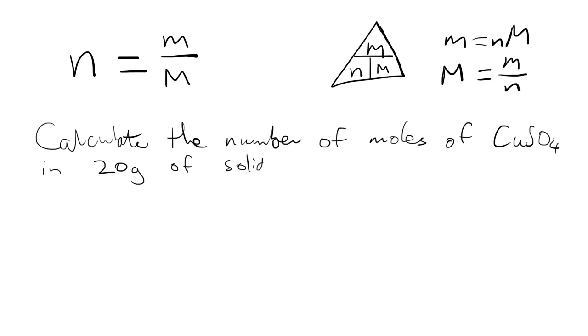So in order to do this calculation we're going to use our formula n equals little m over big M. Now we know our mass, the mass we have of copper sulphate from our question is 20 grams. The other piece of information we need is the molar mass, and the molar mass we always know because we can just calculate it from the periodic table. So if we look at our periodic table and we get the atomic mass of copper that is 63.5.